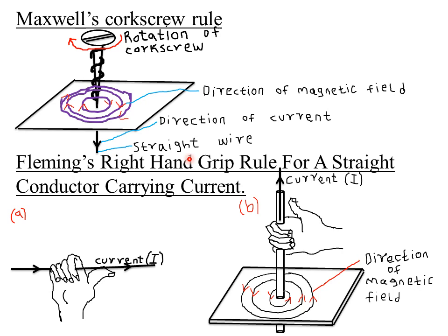Next, we look at what we call Maxwell's screw rule. The Maxwell's screw rule states that if a right-handed screw is driven forward in the direction of the conventional current, then the direction of rotation of the screw is the direction of the field lines.